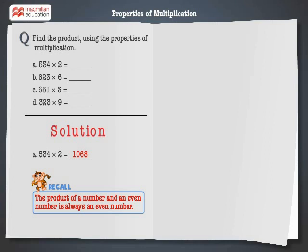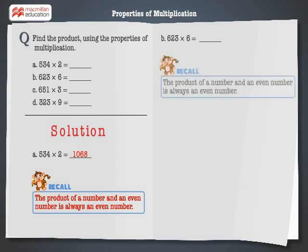Let's solve the next problem. 623 multiplied by 6 is equal to dash. Let's recall that the product of a number and an even number is always an even number. 623 multiplied by 6 is equal to 3,738.